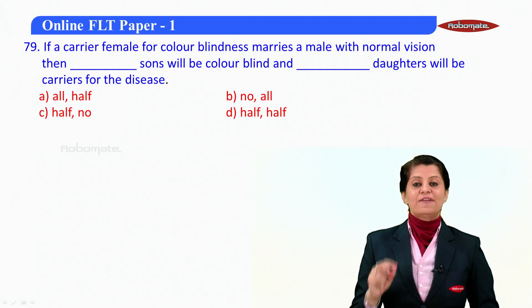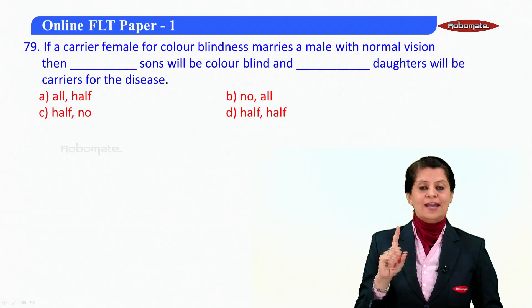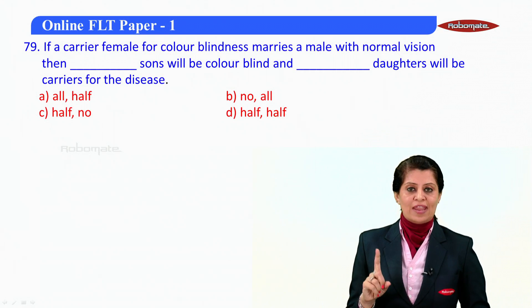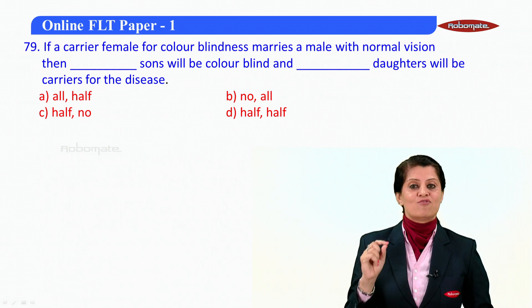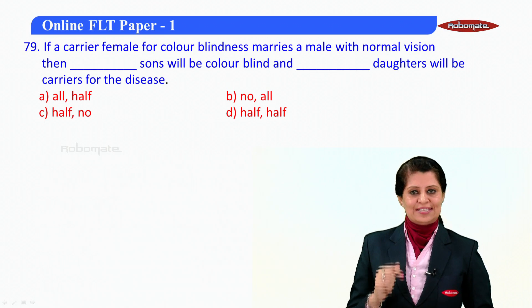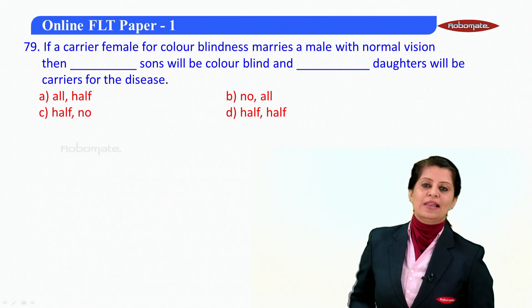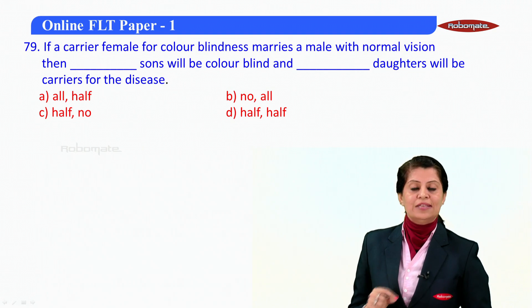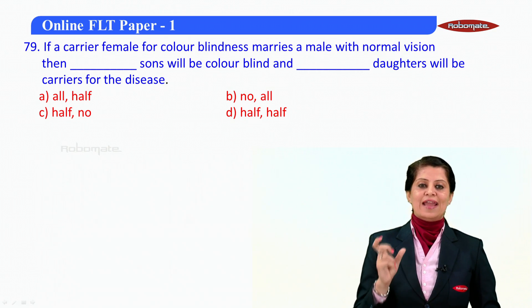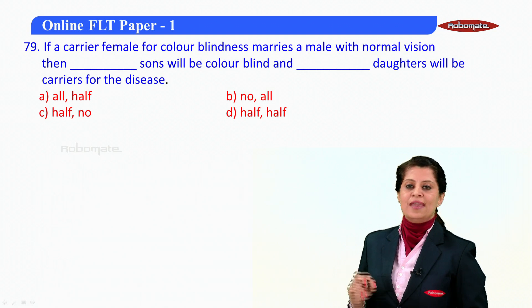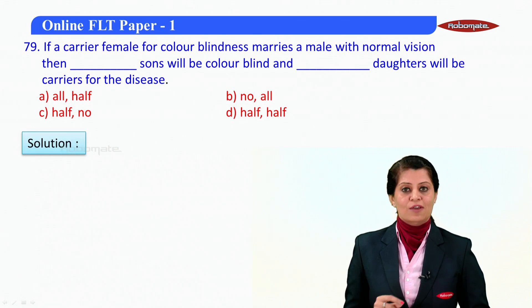The next question is: if a carrier female for color blindness — remember, color blindness is a trait with X-linked recessive inheritance — marries a male with normal vision, then which sons will be colorblind and which daughters will be carriers for the disease? What percentage are we asking about here?